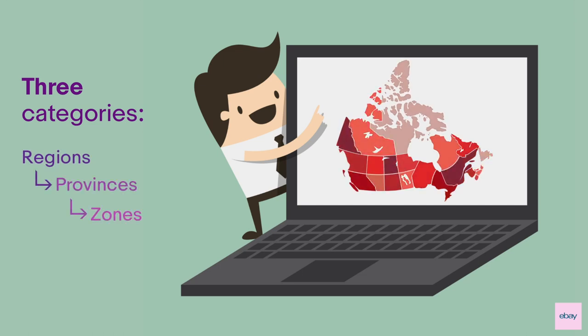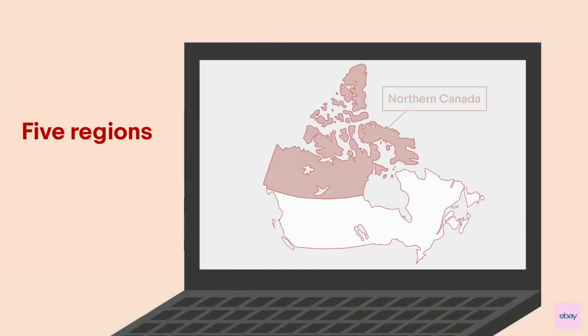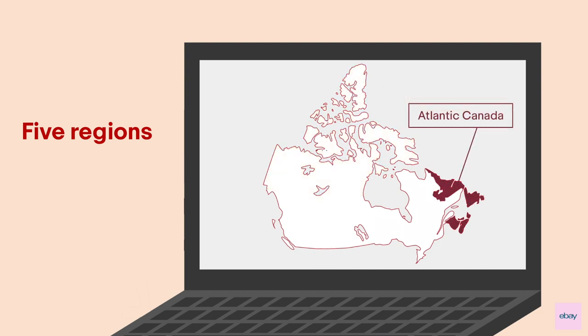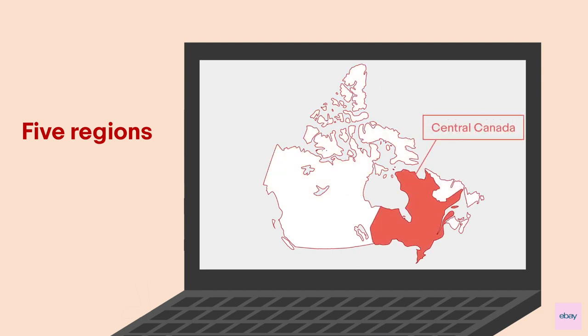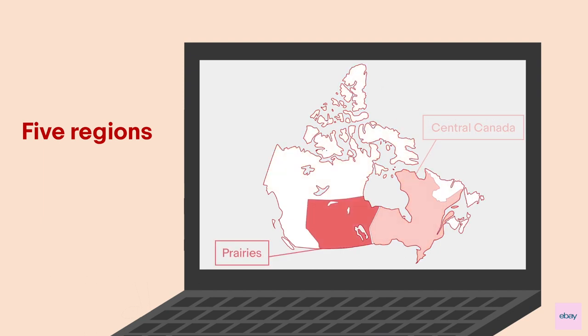There are five regions: Northern Canada, Atlantic Canada, Central Canada, the Prairies, and the West Coast.